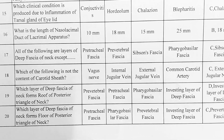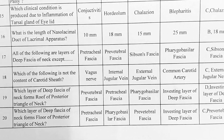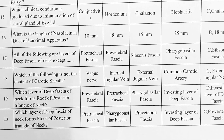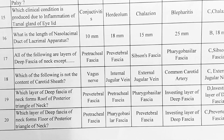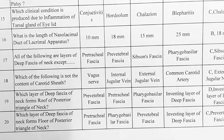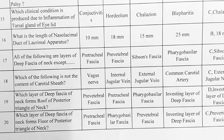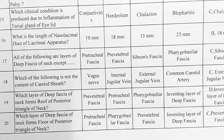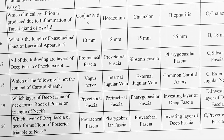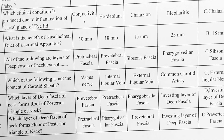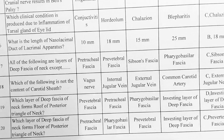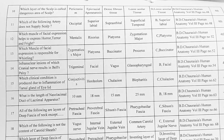Next. Which layer of deep fascia of neck forms the floor of the posterior triangle of neck? Options — A: pretracheal fascia, B: pharyngobasilar fascia, C: prevertebral fascia, D: investing layer of deep fascia. Option C is correct, prevertebral fascia. Thank you for watching the video.